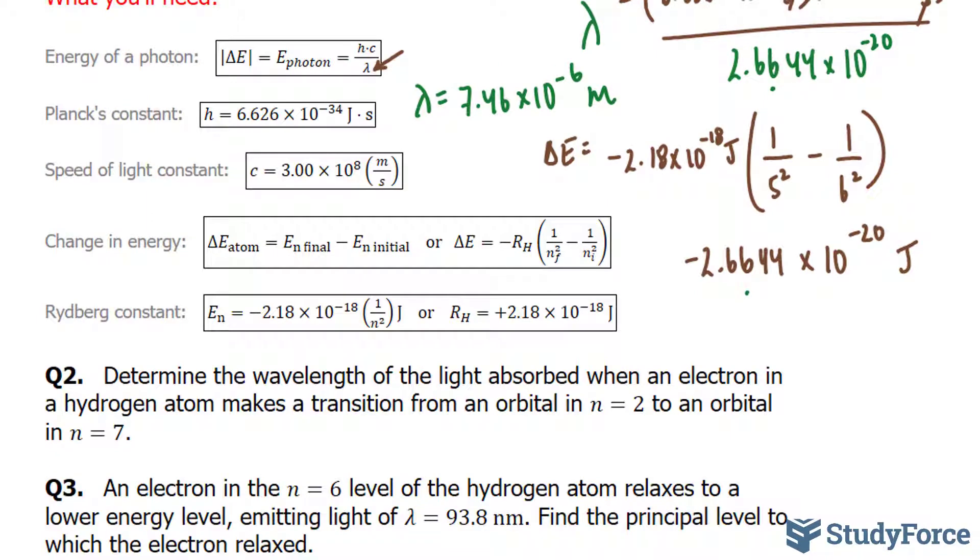Now we learned in question number 1 that to do this, we need this formula, where h times c over lambda gives us the change in energy or the energy of a photon.